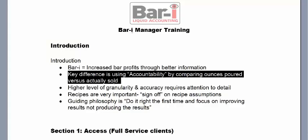What we mean by accountability is precisely comparing how many ounces of every product were poured versus actually sold. Most bars do their inventory each period and calculate their liquor cost, which tells them how many dollars they have to spend to get every dollar in sales. For instance, if you have a 20% liquor cost, for every dollar in sales you spend 20 cents. The system works well to tell you how much money you're making, but it breaks down when you try to identify the performance of individual products, because you're lumping lots of different products together into one number.